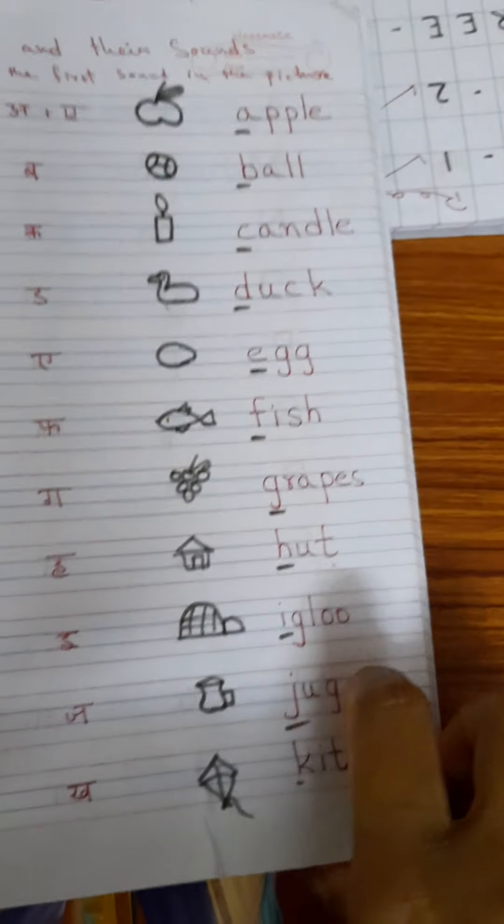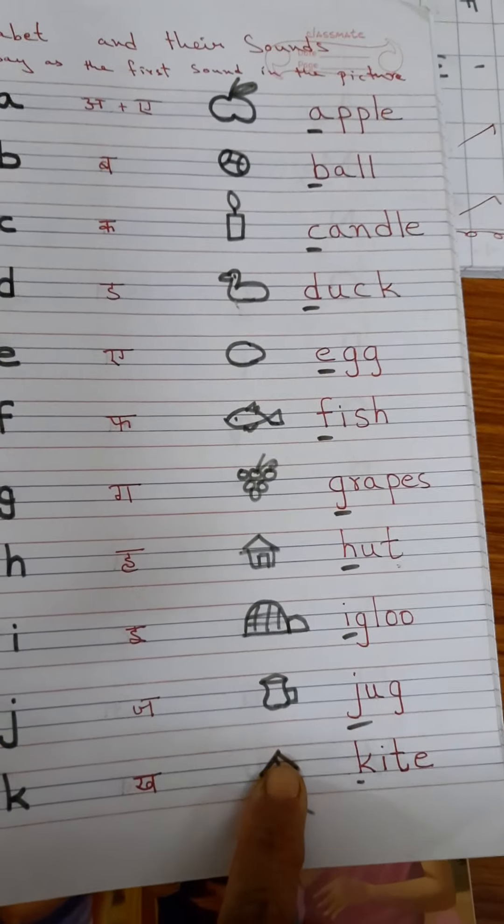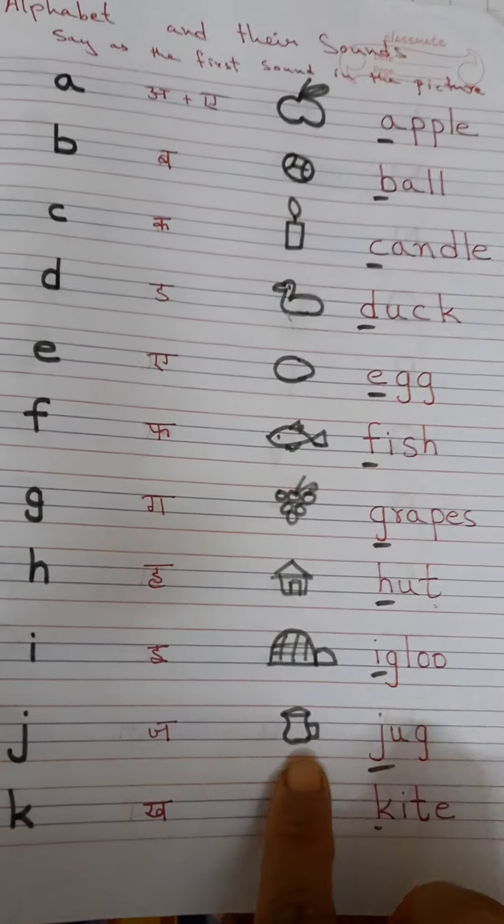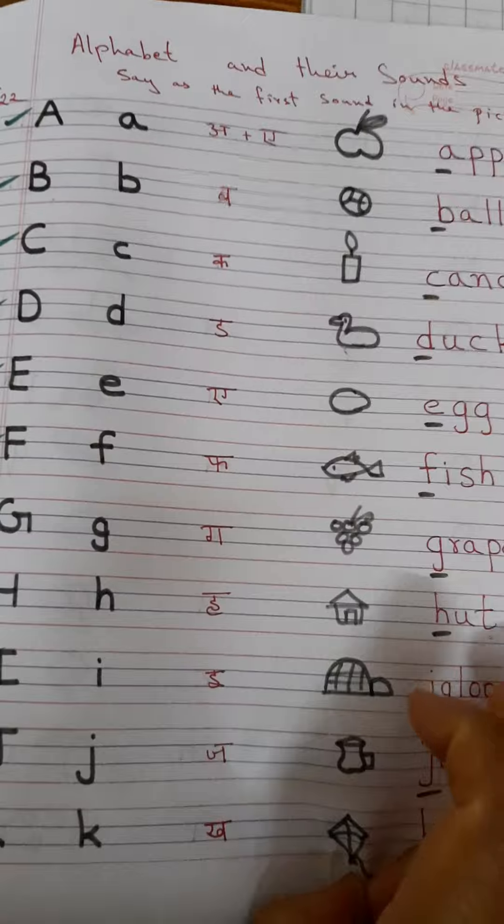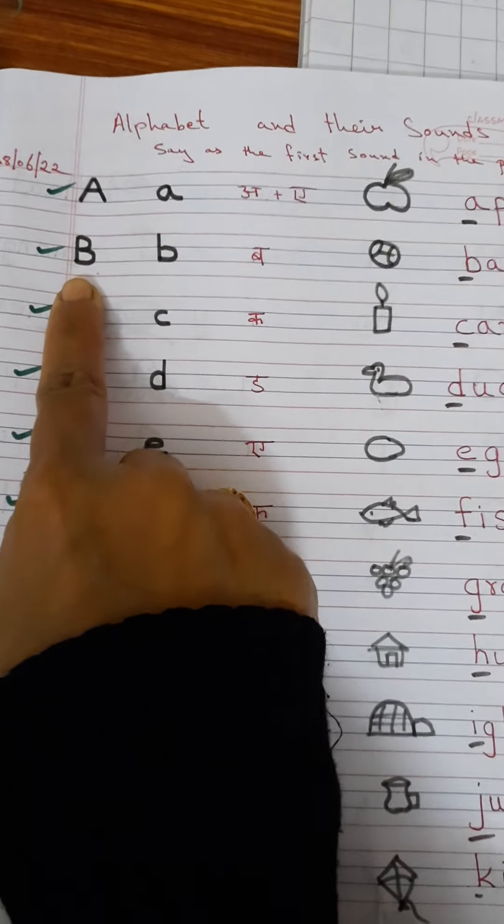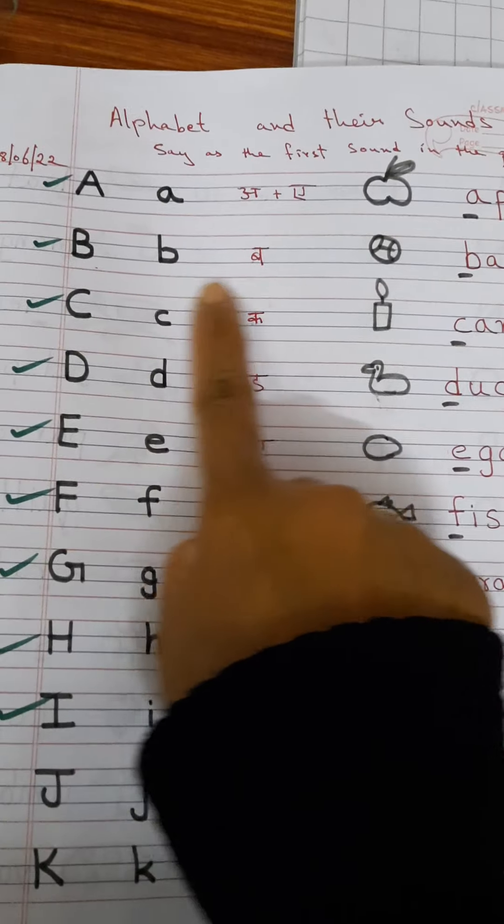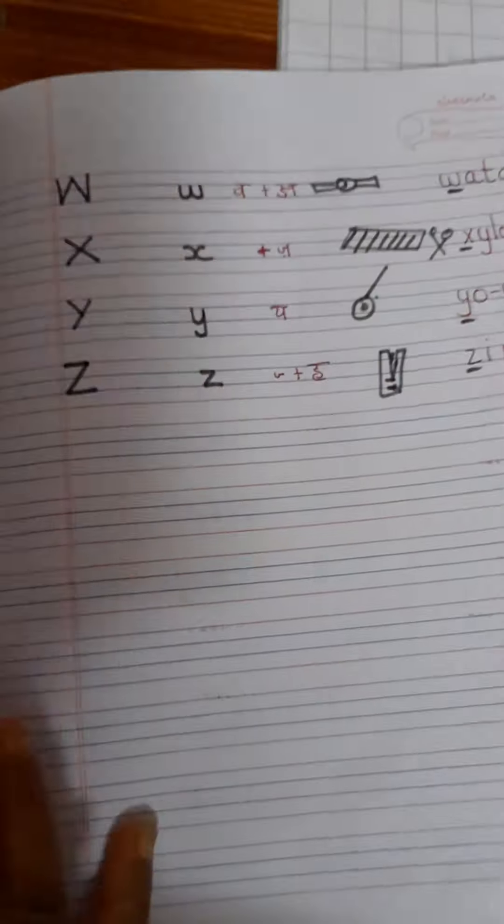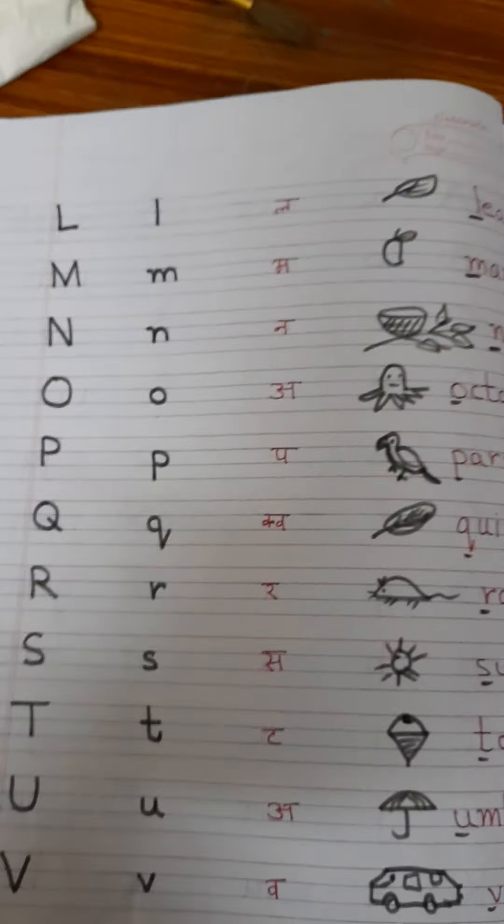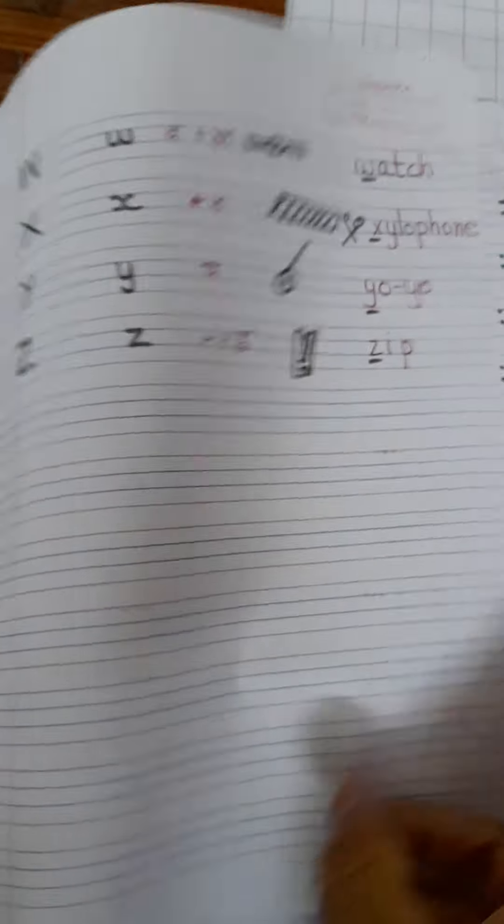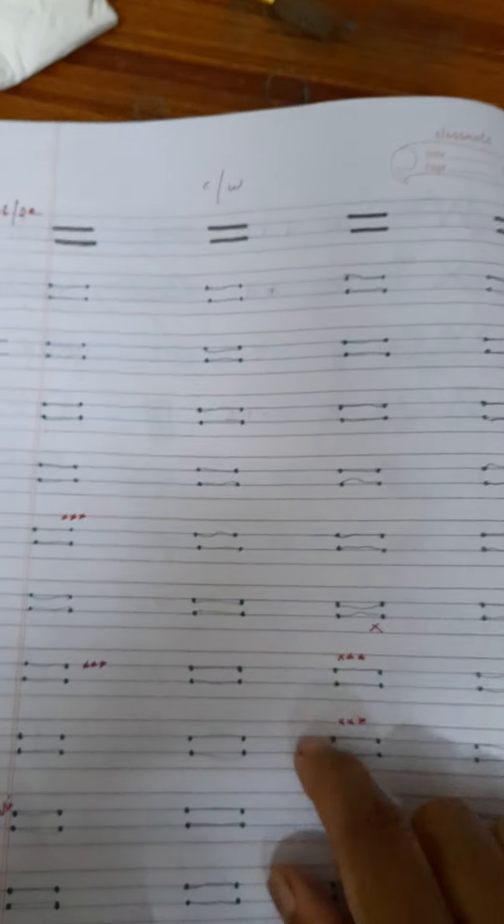Capital B, small b, ball—like this. And this is up to Z. Then sleeping line.